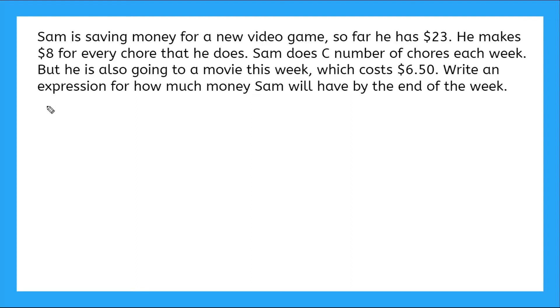So what do we know? We know that Sam right now has $23. And we know that he does chores and he makes $8 for every chore he does. So $8 for every chore. And how many chores has he done? C, that's our variable. C number of chores so far. And he's going to a movie this week, which costs $6.50. So this is how much money he will be spending, right? He has to spend this money.